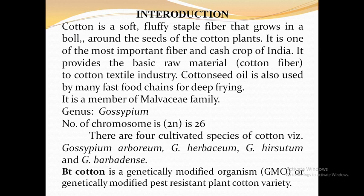Cotton seed oil is also used by many fast food chains for deep frying. It is a member of the Malvaceae family, genus Gossypium. The chromosome number is 2n=26. There are many species of Gossypium, but out of these, there are four cultivated species of cotton.